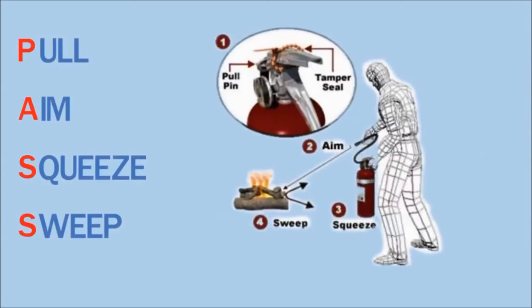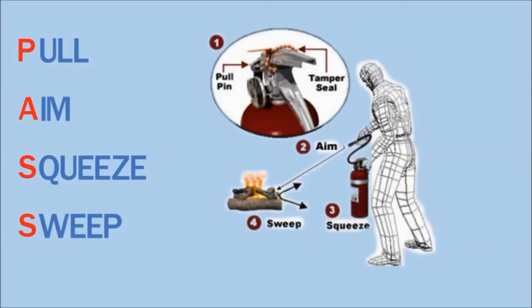When you need to use the extinguisher, first pull the safety pin from the handle. Then, aim the extinguisher nozzle at the base of the fire. This is the spot where the flames are touching the fuel source.